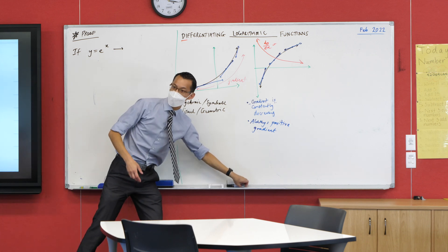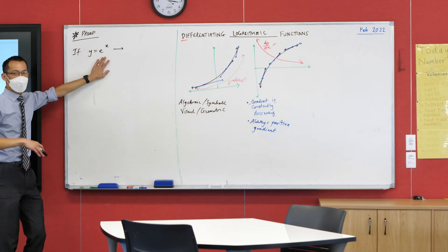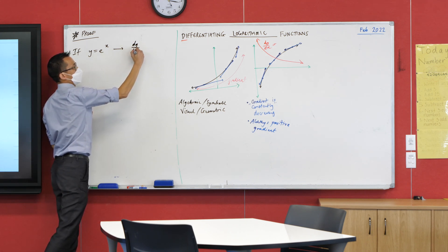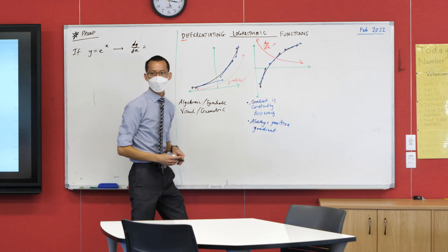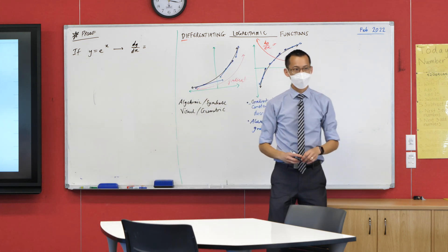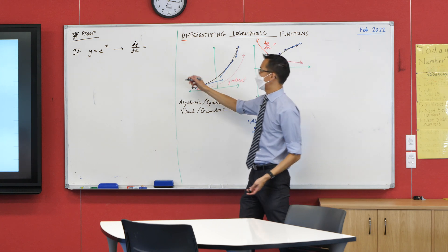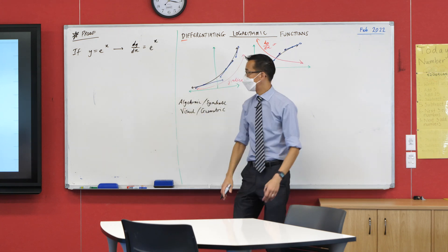So, start off with a nice easy result that you guys all know, right? If I have just stock standard exponential function, then its derivative should be what? This is the one we know, right? Shout it out at me. You all know. E to the X, right?